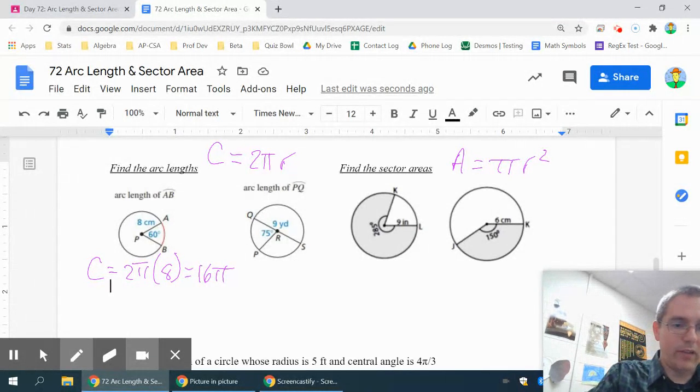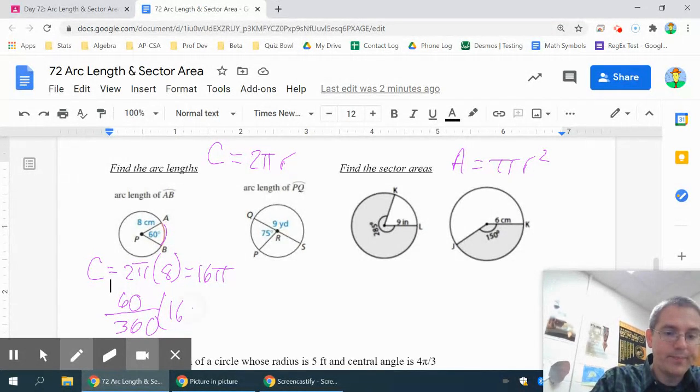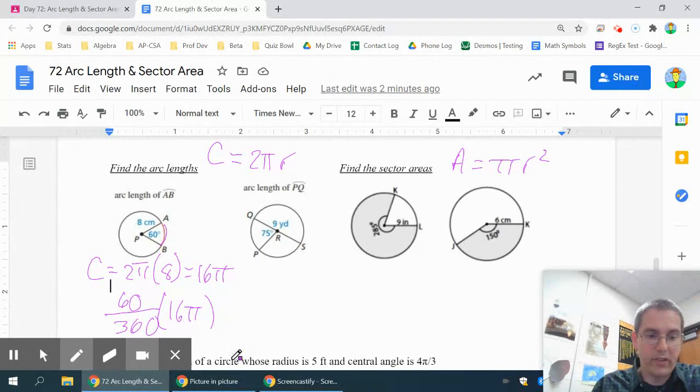Now for the arc length, I take the measure of the arc in degrees. And I do 60 out of 360. I compare 60 degrees because that's the arc I have. The central angle always matches the arc, remember. And I do it out of 360 because there's 360 degrees in the entire circle. Multiply that by 16π.